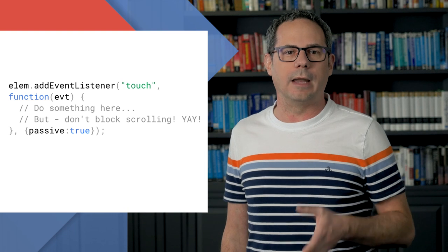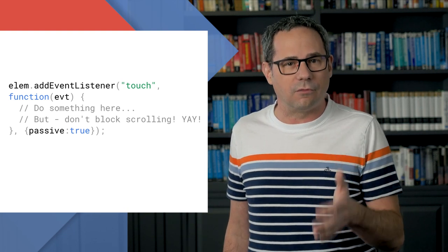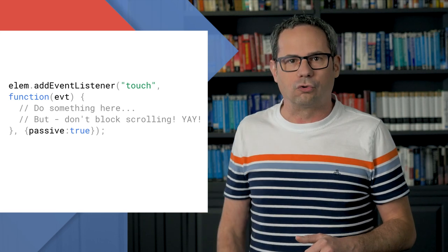Chrome 51 adds support for passive event listeners, allowing you to declare that an event listener won't prevent a scroll, making it easier to eliminate jank. These are just a few of the changes in Chrome 51 for developers.